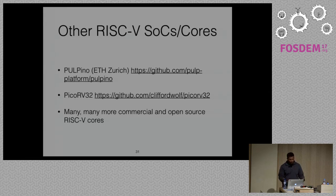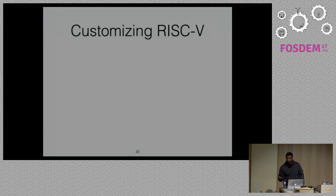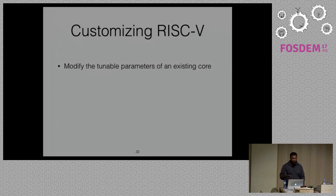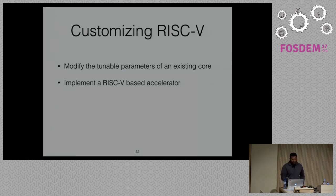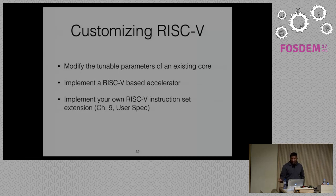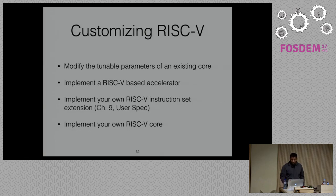If you want to customize RISC-V, the easiest way is to modify the tunable parameters of an existing core — grab the Rocket Chip and play with parameters like disabling the floating point unit or adjusting the cache hierarchy. You can also implement your own RISC-V accelerator or custom instruction set extension. Chapter 9 of the user specification has information on this. If it might be useful to others, you can submit it for standardization.